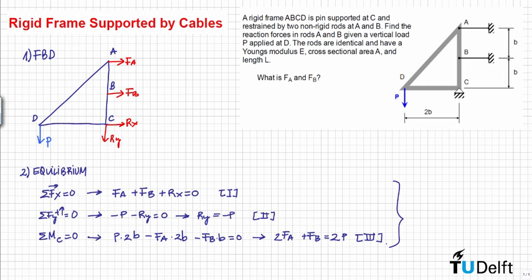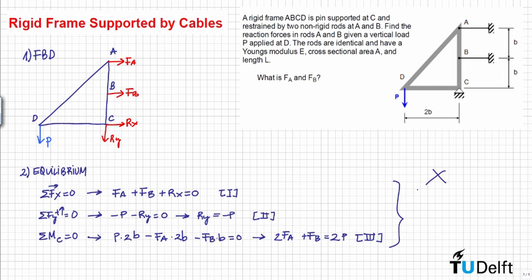We now have three equations but four unknowns — FA, FB, Rx, and Ry — so we need one additional equation. Because there is one redundancy in the problem, we need to find one displacement compatibility equation.